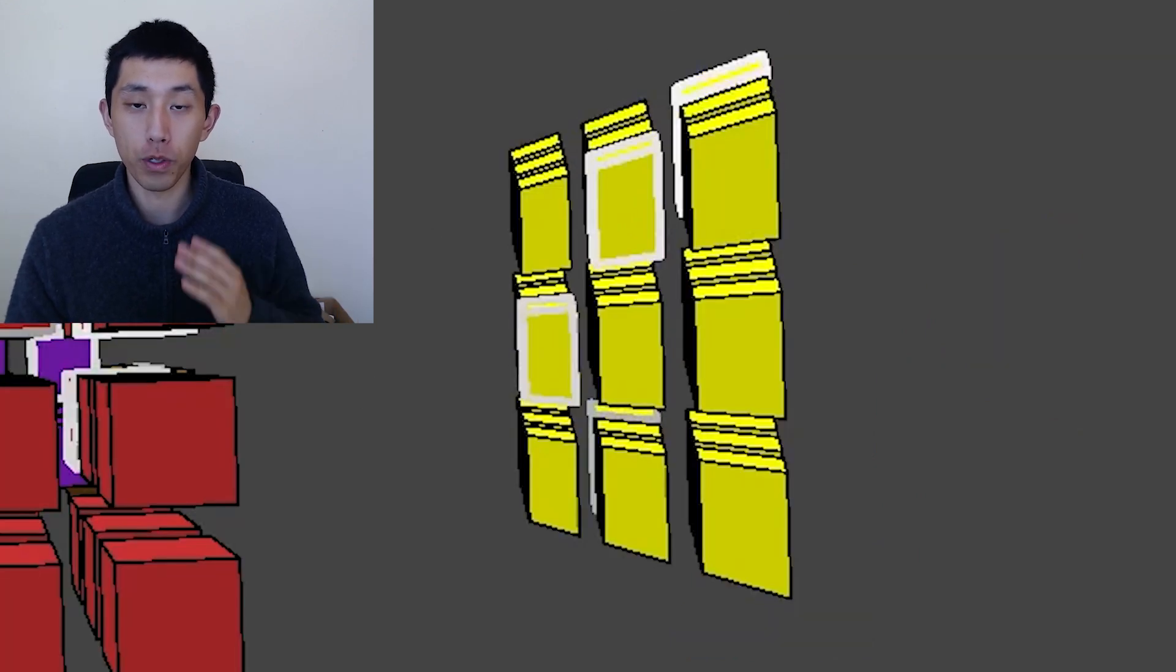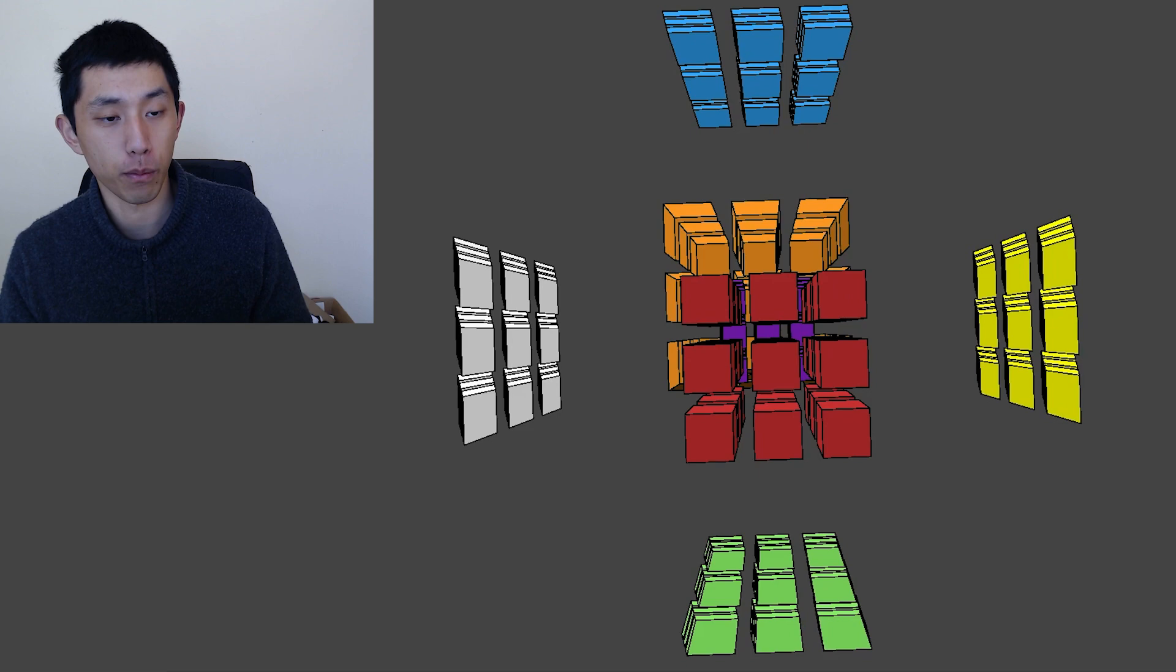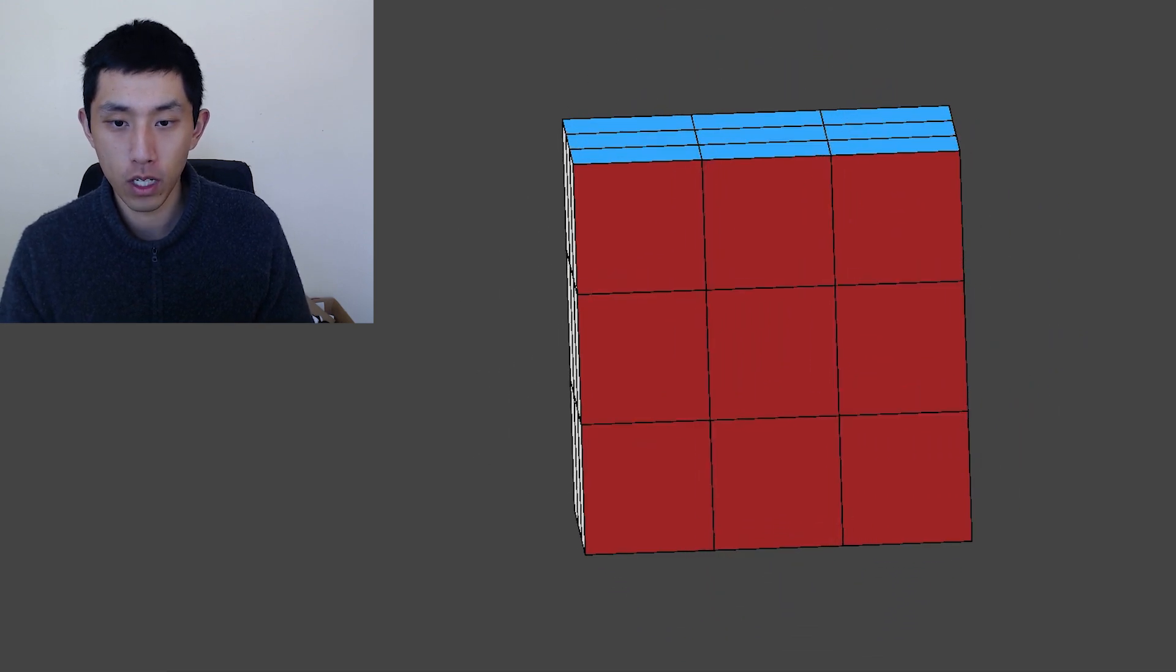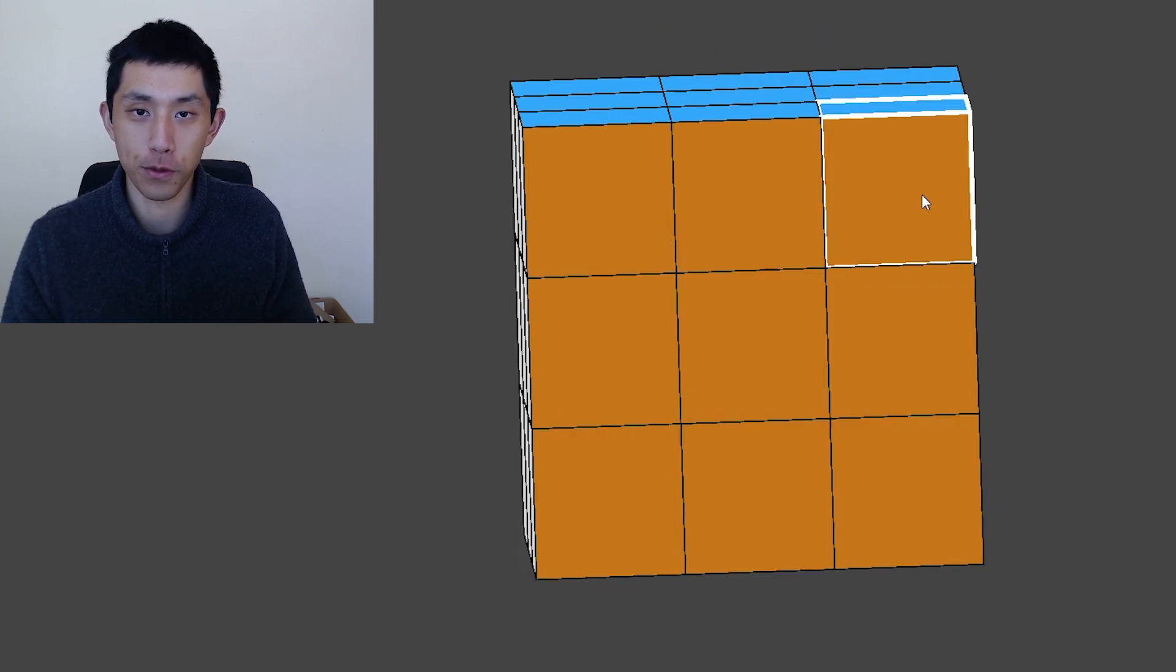The reason why all the pieces and stickers are spaced apart is that if you have them close like a normal 3D Rubik's Cube, we can't really see most of it and it just looks weird.